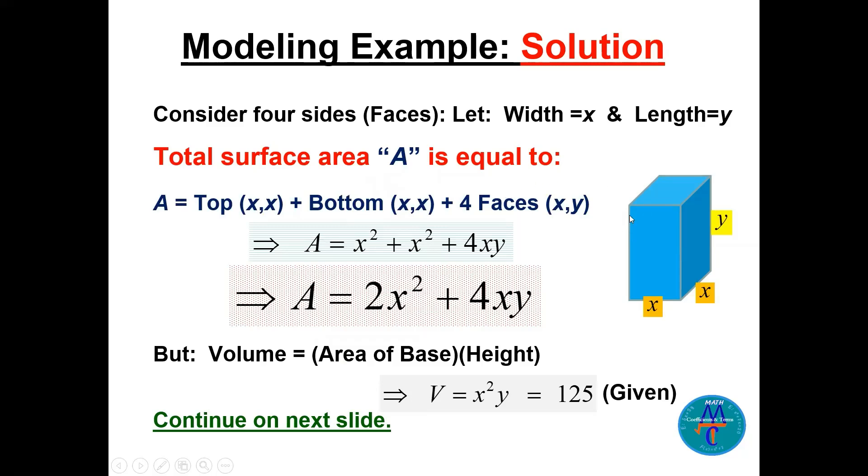We have here four faces, all of them will be rectangles. The width is x and the length is y. We have the top is a square and the bottom is a square. So if we need the area, we can say the area of the top which is x times x will be x squared. The area of the bottom here is also a square, it will be x times x. Four faces we have x times y so it will be 4xy.